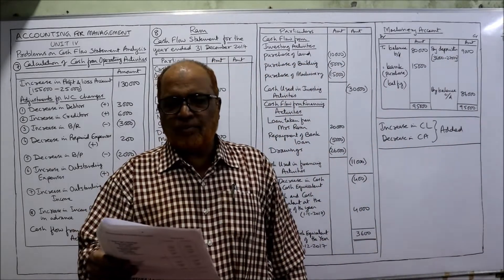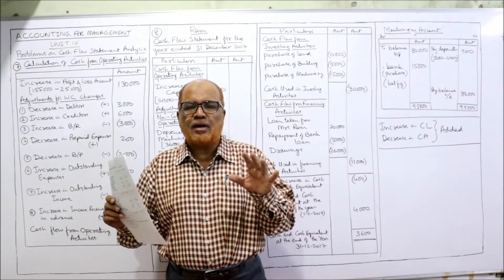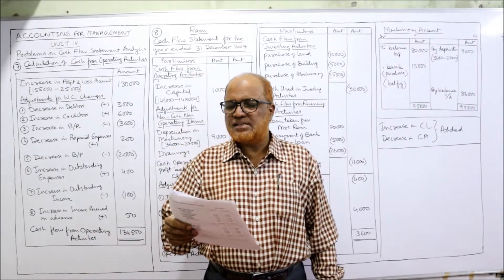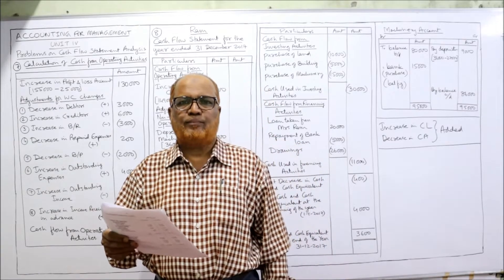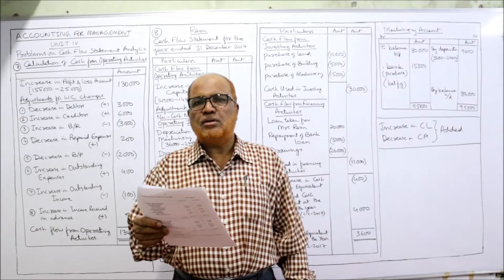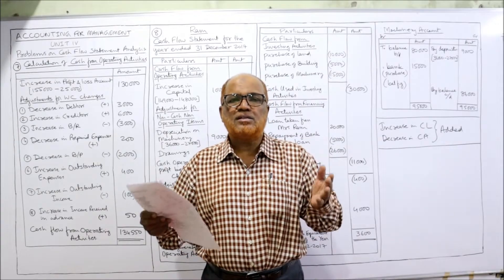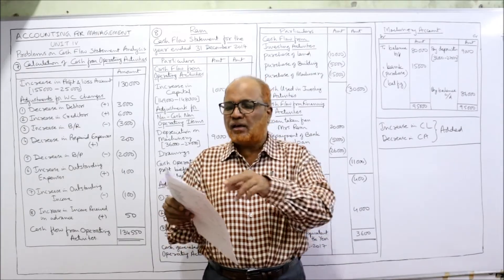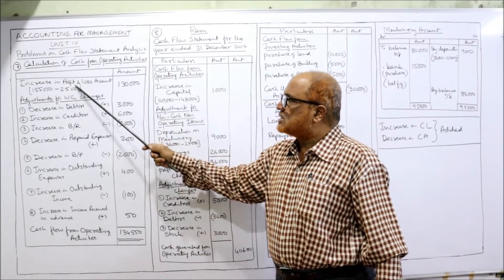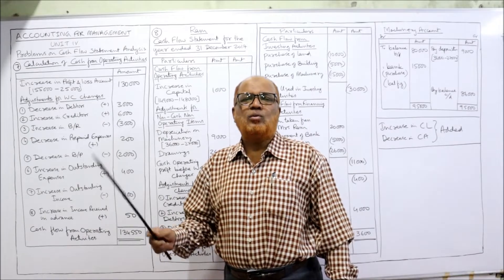See the seventh problem: from the following figures, calculate cash from operating activities. We are not required to make the full cash flow statement — it is simply asking you to calculate cash from operating activities. Balances are given on 31st December 2019 and 31st December 2020. The P&L account balance last year is 25,000 and current year 1,55,000. When the profit and loss account balance increases, it means there is a profit during the year. So profit earned = 1,55,000 minus 25,000 = 1,30,000.